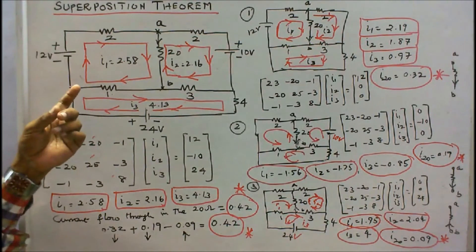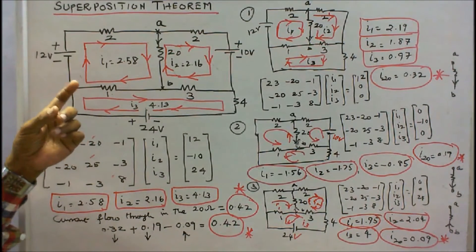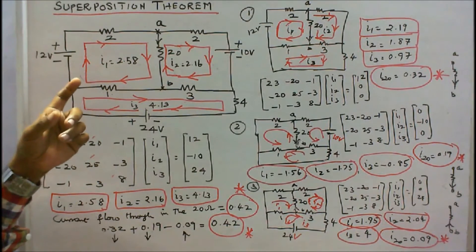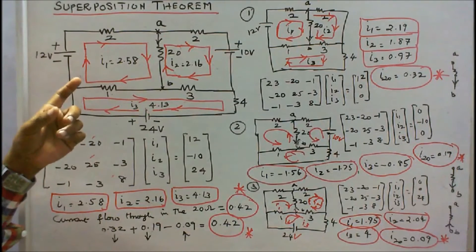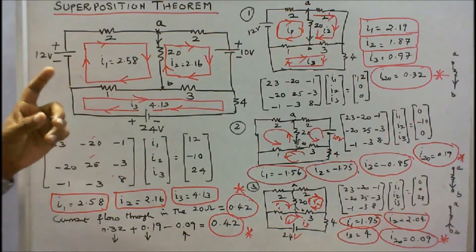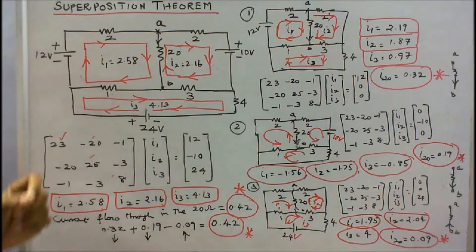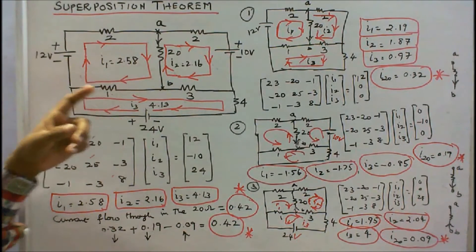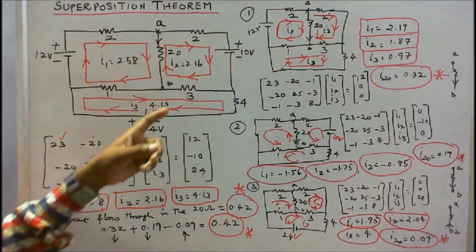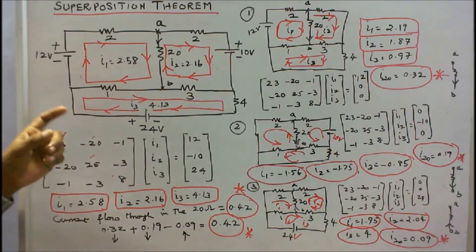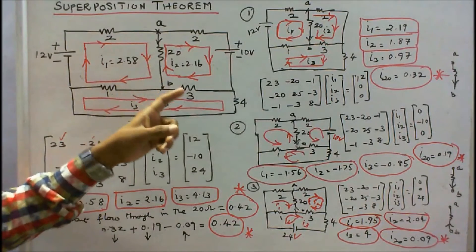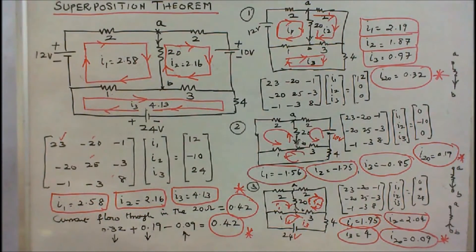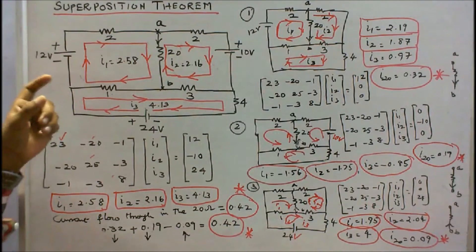This is the given network. The question is: find the current through the 20-ohm resistor using, (A) Maxwell's mesh method or loop method, and (B) using superposition theorem. In this problem there are three voltage sources: 12V, 10V, and 24V, and six resistors: 2 ohm, 2 ohm, 20 ohm, 3 ohm, 1 ohm, and 4 ohm. First, I solve the problem using the loop method.